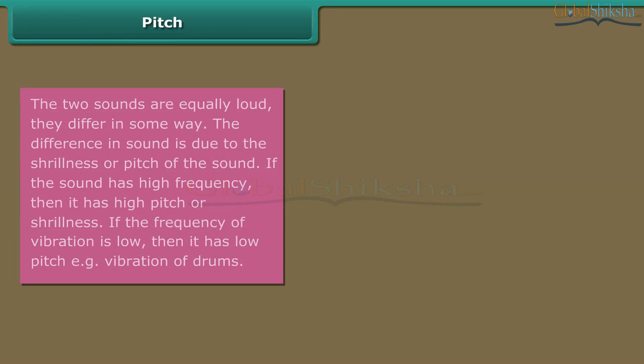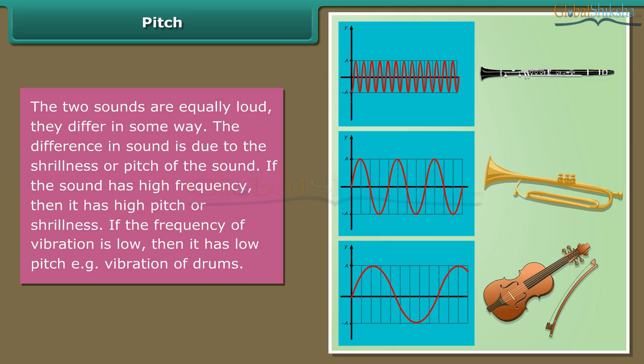Pitch: The two sounds are equally loud, they differ in some way. The difference in sound is due to the shrillness or pitch of the sound. If the sound has high frequency, then it has high pitch or shrillness. If the frequency of vibration is low, then it has low pitch, that is, vibration of drums.